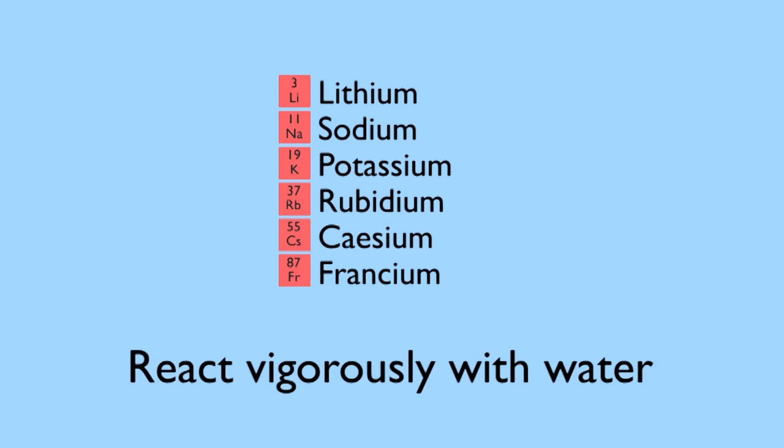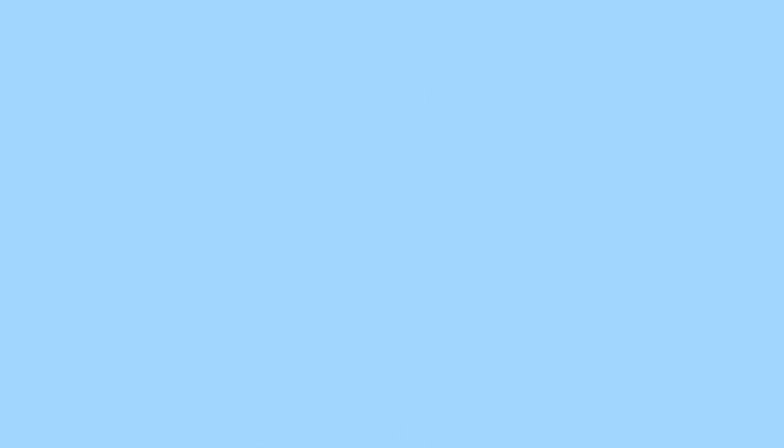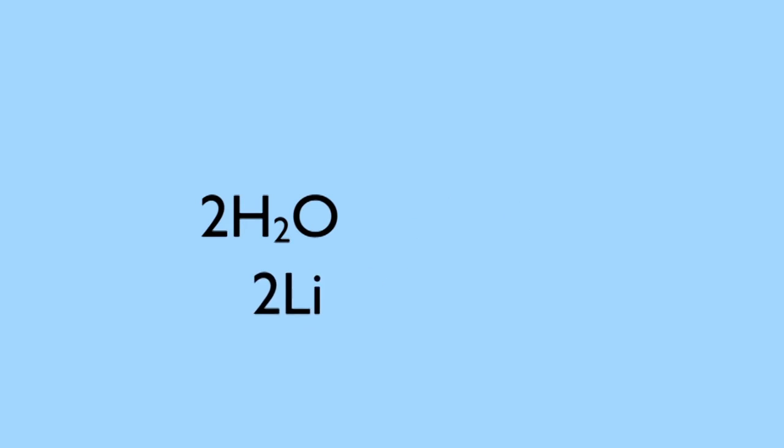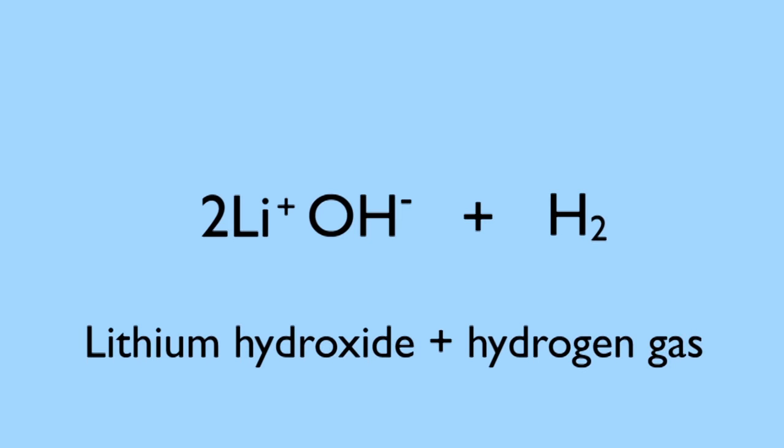Group 1, the alkaline metals, all react vigorously with cold water. The metal atom displaces hydrogen from the water molecule to form a metal hydroxide and hydrogen gas.